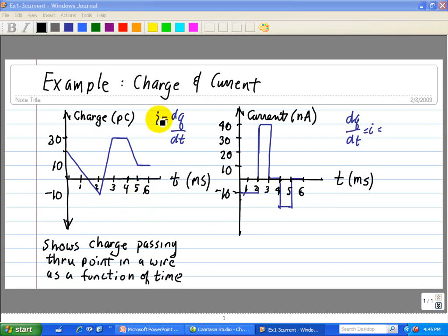Well, we note that i is equal to dq over dt. So the current i is the change in the amount of charge with respect to time.